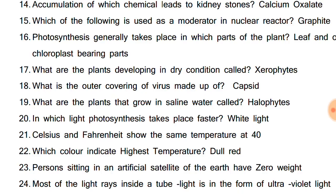Celsius and Fahrenheit show the same temperature at -40. Which color indicates the highest temperature? Dull red. A person sitting in an artificial satellite of the earth has zero weight. Most of the light rays inside the tube light are in the form of ultraviolet light.